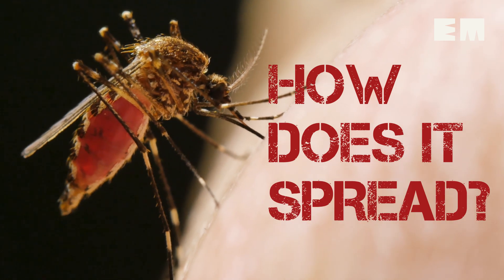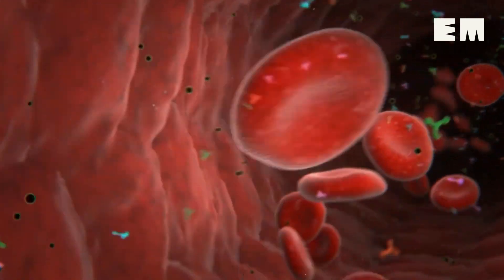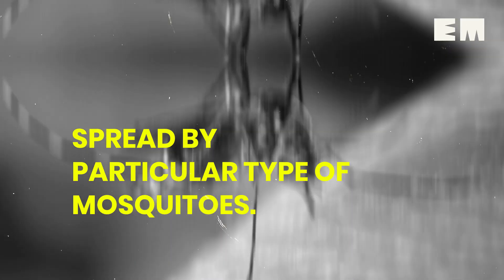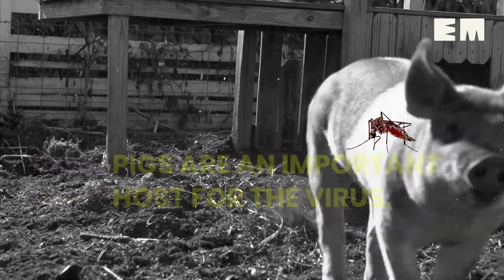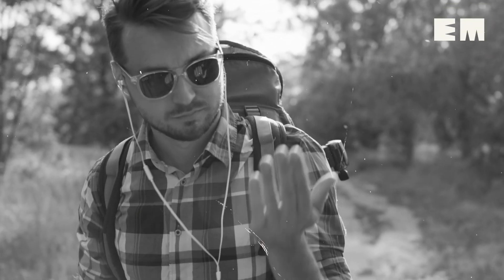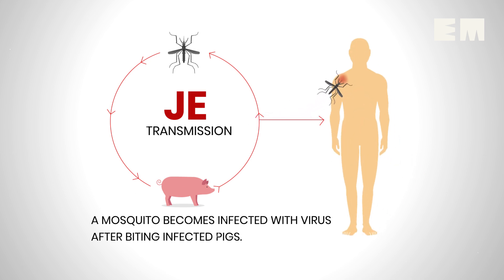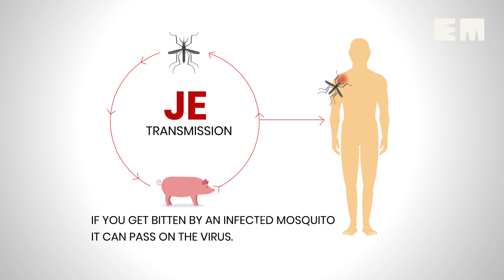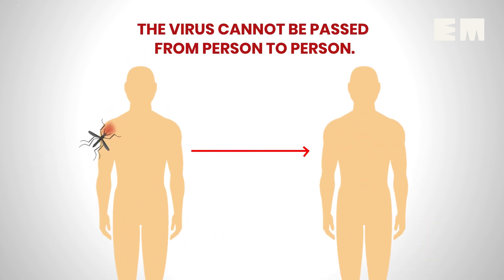How does it spread? The virus is spread by a particular type of mosquito. Pigs are an important host for the virus. A mosquito becomes infected with the virus after feeding on infected pigs. If you get bitten by an infected mosquito, it can pass on the virus. However, Japanese Encephalitis cannot be passed from person to person.